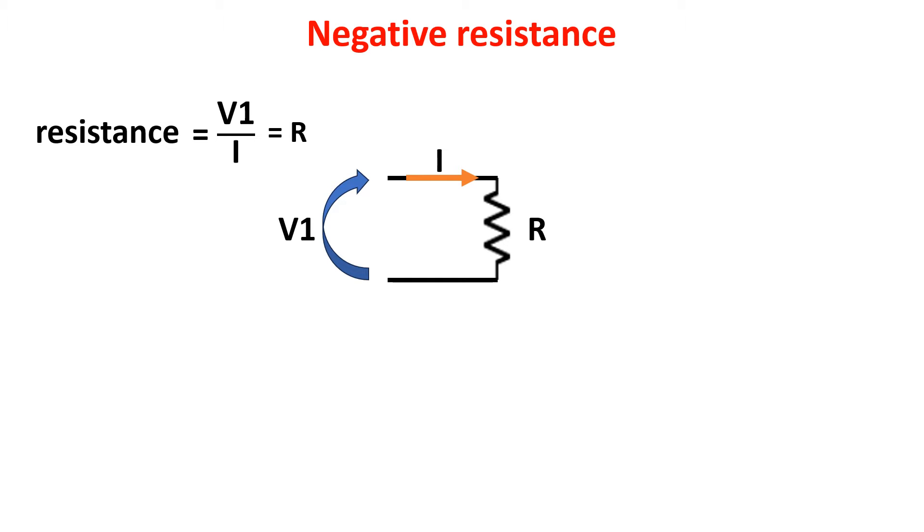If we now think about creating a negative resistance, we need to reverse the current direction. So by applying a voltage V1, we get a current toward the voltage source V1 itself. Theoretically, this can be done by applying another voltage source V2 larger than V1.